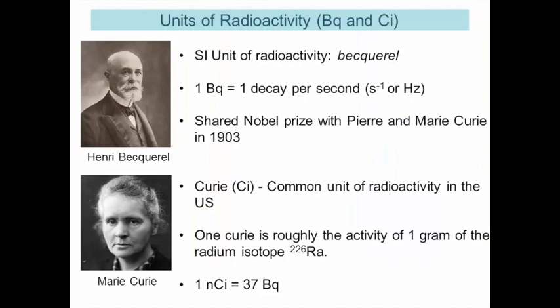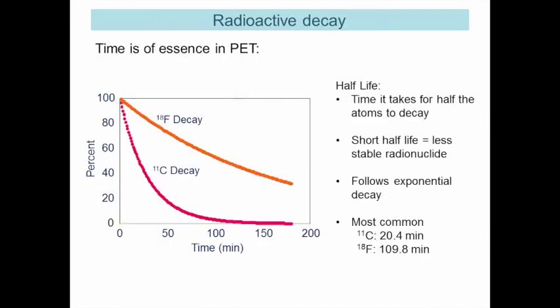There are a couple of important definitions. The units of radioactivity are in Becquerel — the SI unit — meaning one Becquerel equals one decay per second. In the US, we generally use curie or millicuries. It's a simple linear conversion: one nanocurie equals 37 Becquerel. Radioactive decay means that time is of the essence in PET imaging. If you look at F-18 versus C-11, the decay curves follow an exponential decay and are very different, because F-18 has a longer half-life of almost two hours while C-11 has a half-life of 20 minutes.